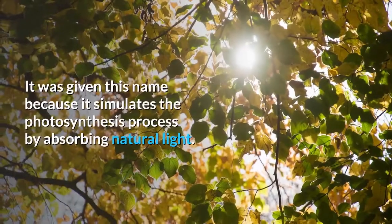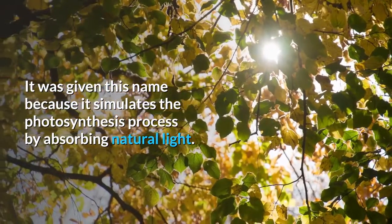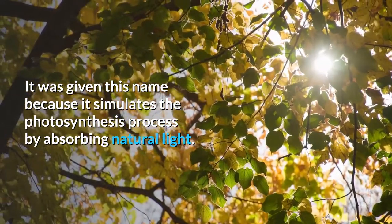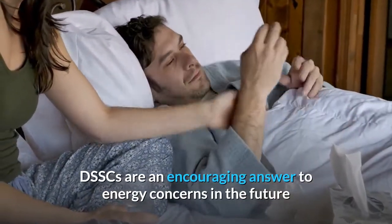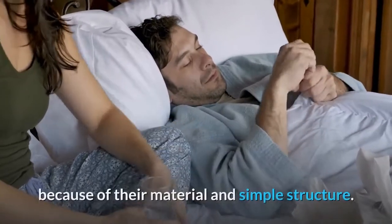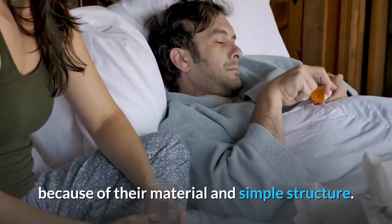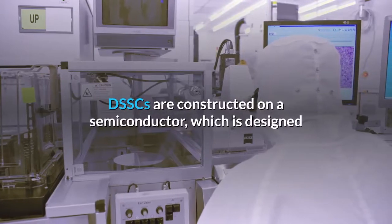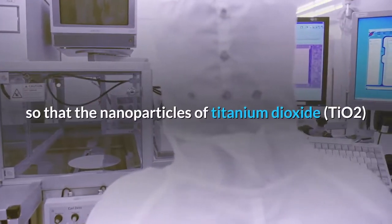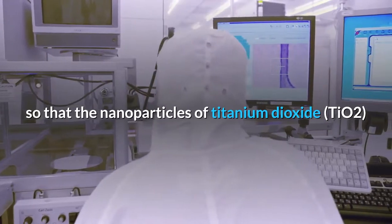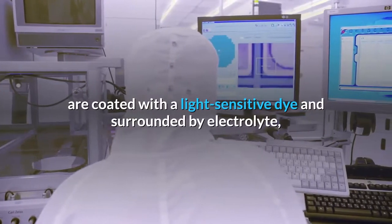It was given this name because it simulates the photosynthesis process by absorbing natural light. DSSCs are an encouraging answer to energy concerns in the future because of their material and simple structure. DSSCs are constructed on a semiconductor which is designed so that the nanoparticles of titanium dioxide are coated with a light sensitive dye and surrounded by electrolyte which is inserted between another electrolyte and a cathode.